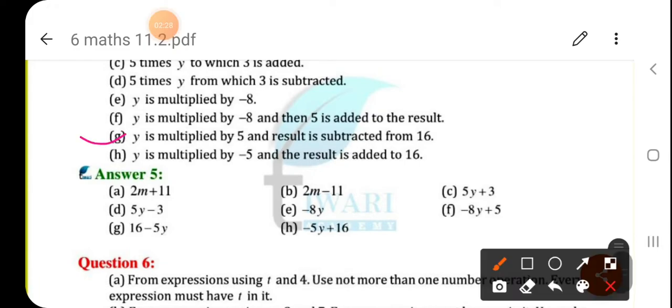Y is multiplied by 5 and the result is subtracted from 16. So from 16 you have to subtract 5 into y. Then y is multiplied by minus 5 and result is added to 16. So it is minus 5y plus 16.